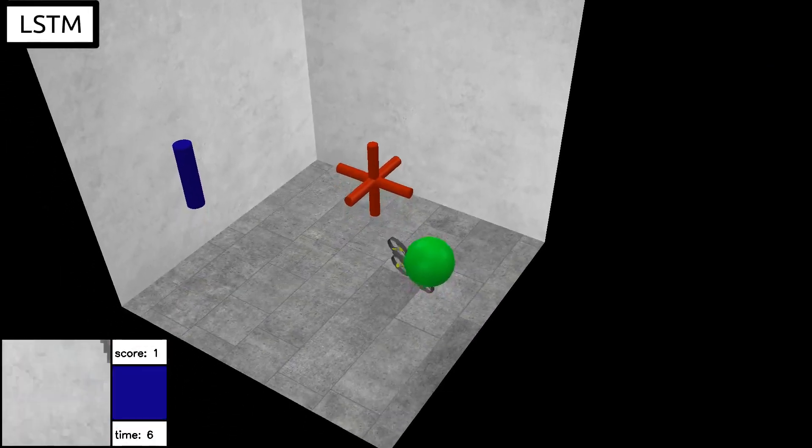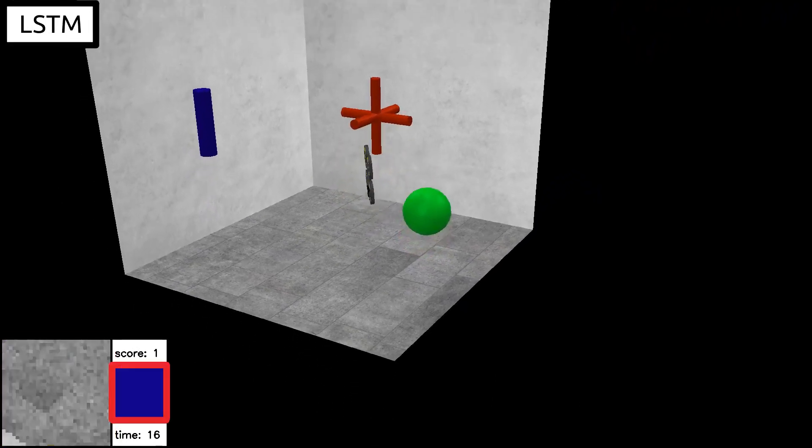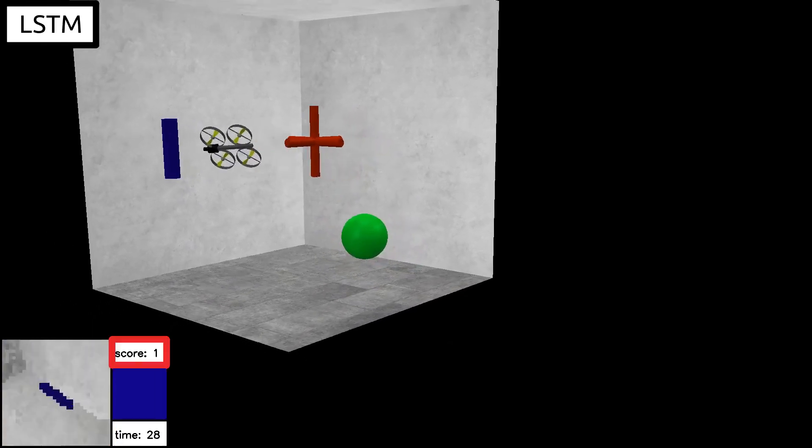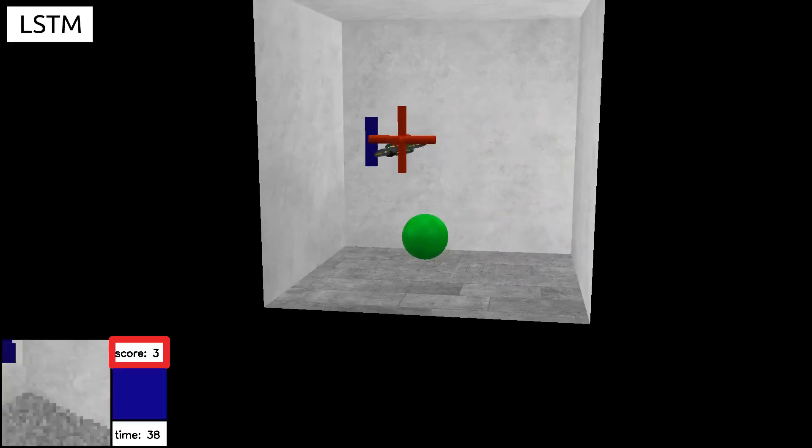Here we show an example of the drone reacher task, with an on-board camera conditioned on target color and trained using imitation learning. The baseline LSTM architecture struggles to optimally interpret the stream of images and poses, and often searches for previously visited targets.